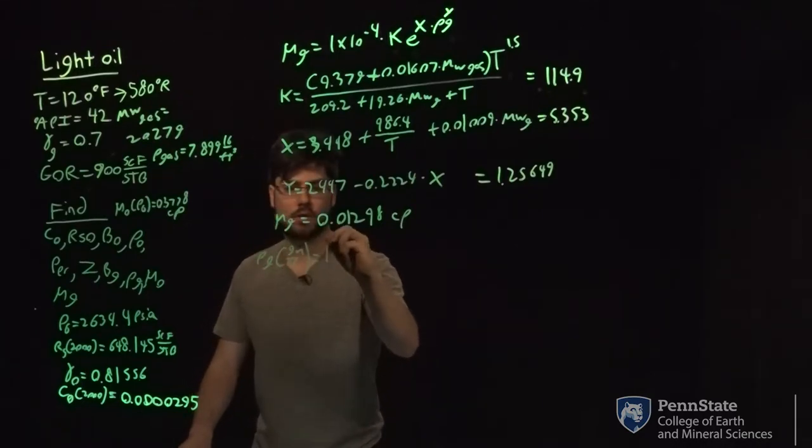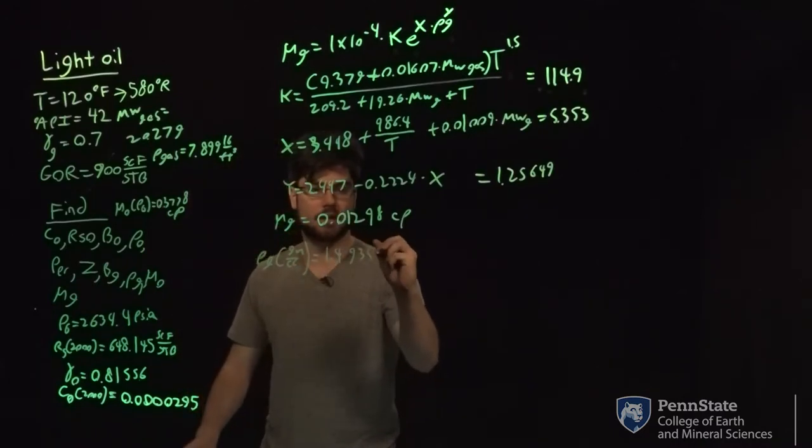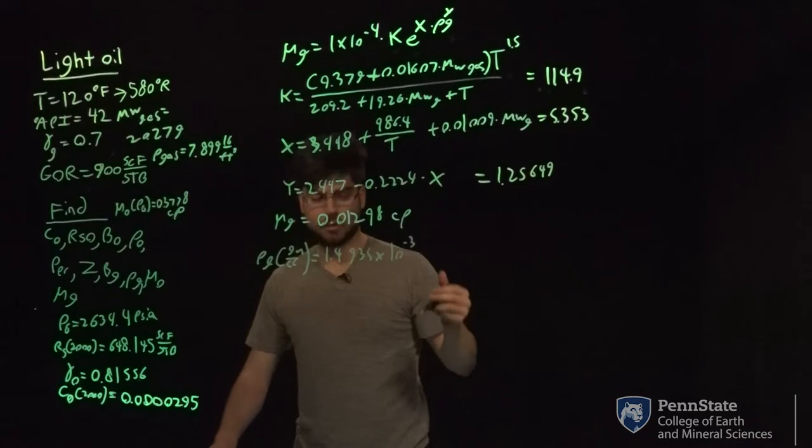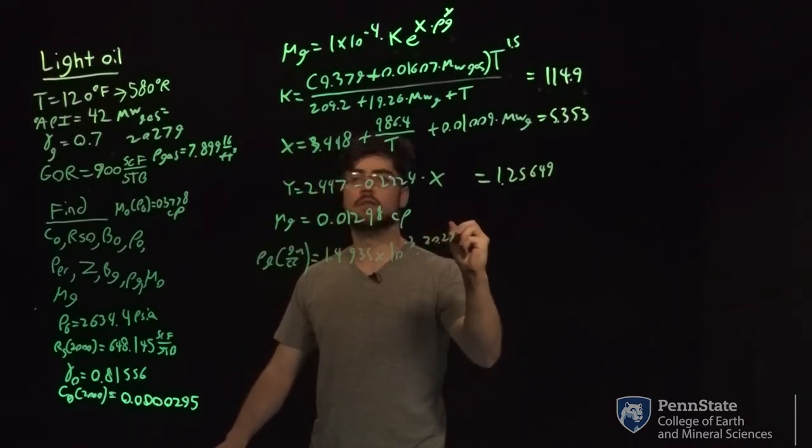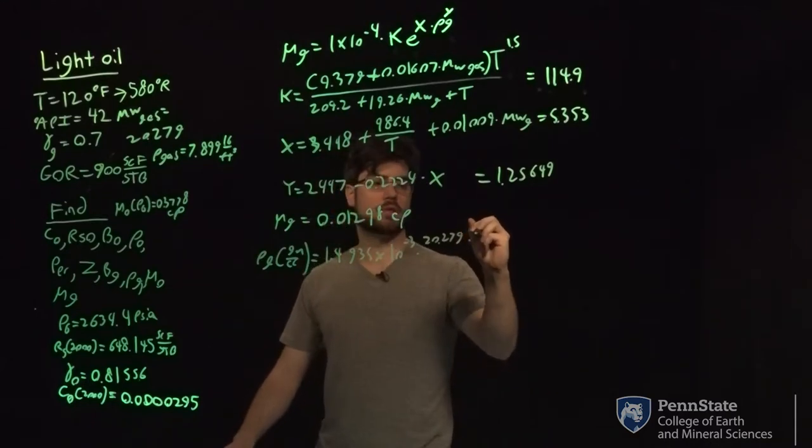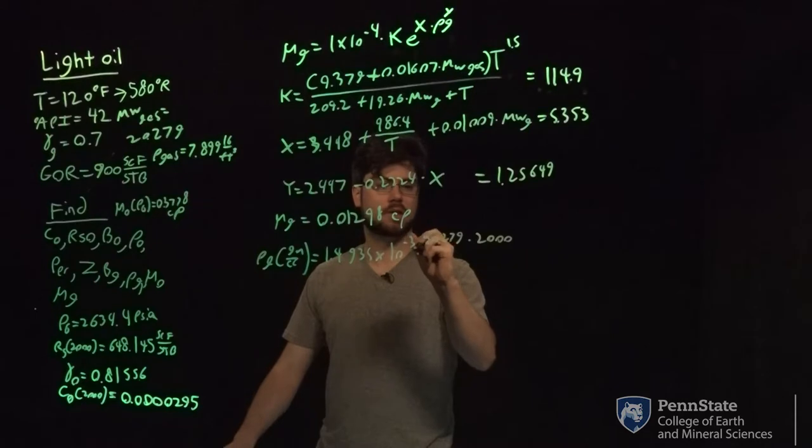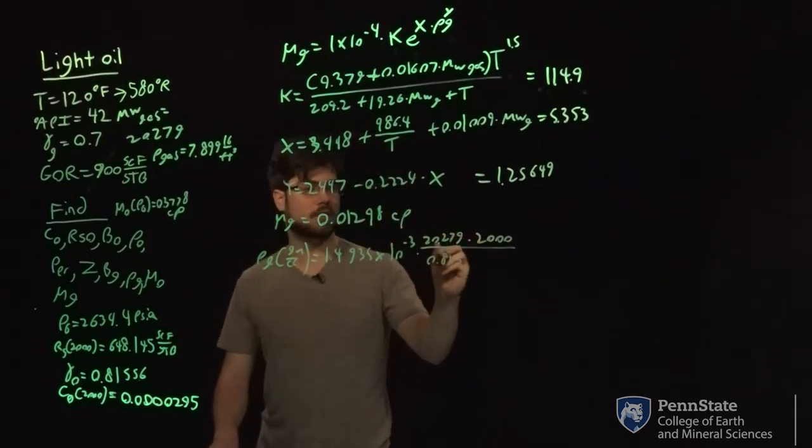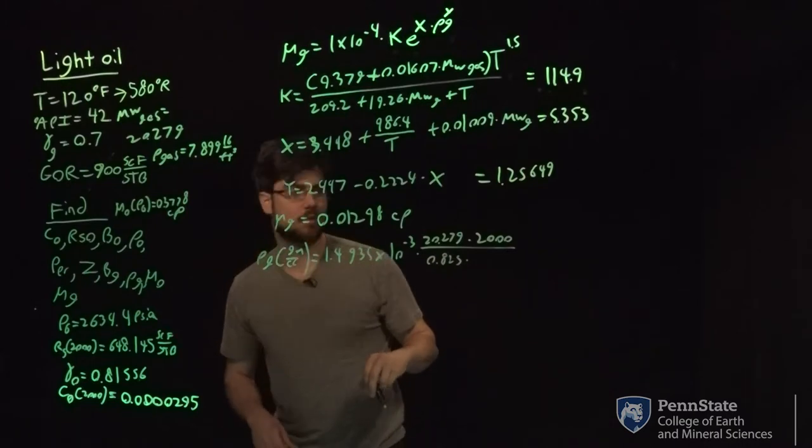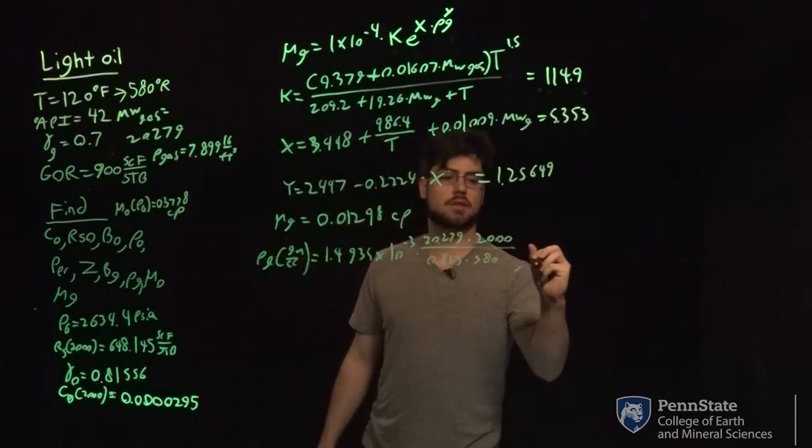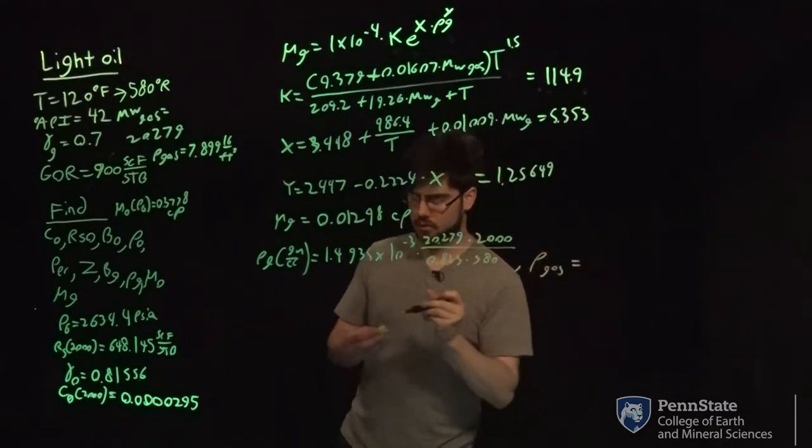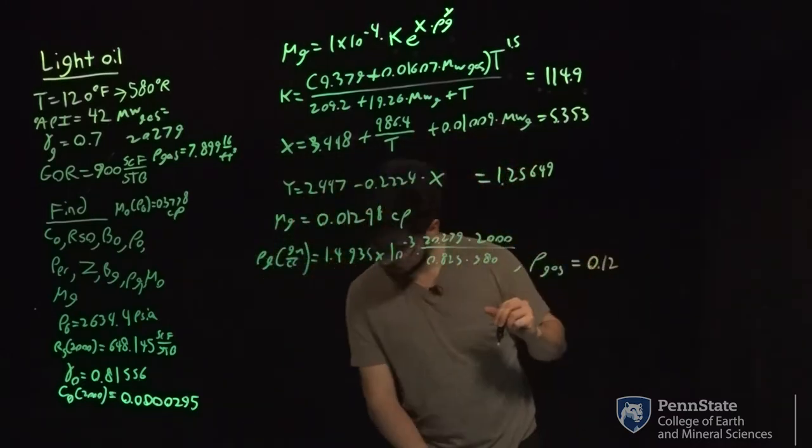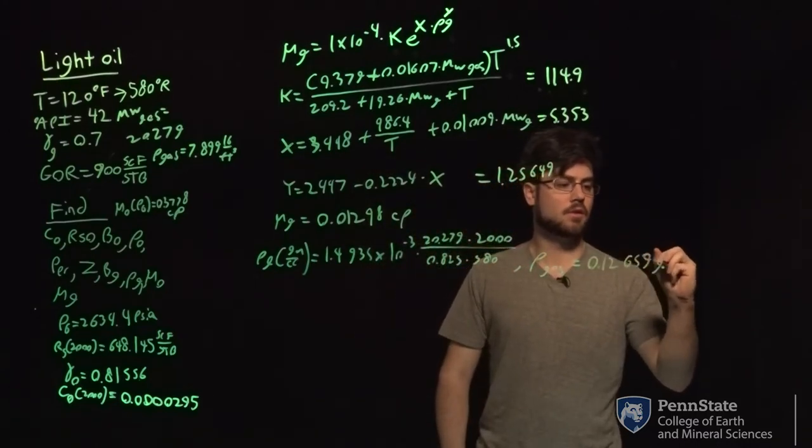It's going to equal 1.4935 times 10 to the negative third times your molecular weight of your gas, which is 20.279 times your pressure, which is 2,000 psi. And then this is all going to be divided by z, which is 0.825, and then times your temperature, which temperature will have to be in Rankine, which is 580.